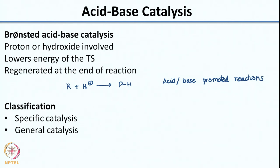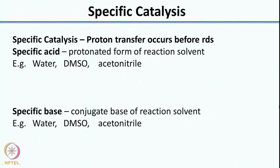For classification, they are classified as specific catalysis and general catalysis. What do each of these terms mean? The first is specific catalysis. Many people get confused with the terms specific and general. What you need to remember is in specific catalysis, proton transfer occurs before the rate-determining step - so proton transfer is not involved in the rate-determining step. In other words, the proton transfer is very, very fast.